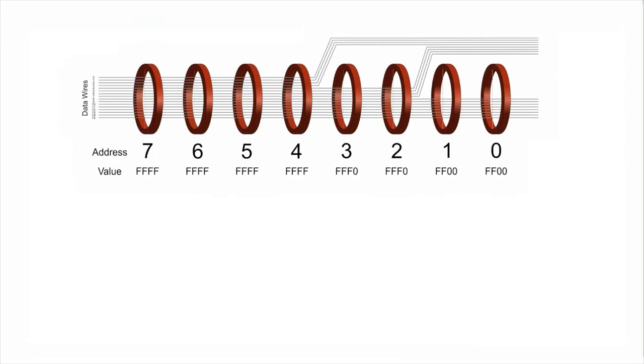So locations 0 and 1 now contain FF00, locations 2 and 3 contain FFF0, the 4 last locations are still FFFF.